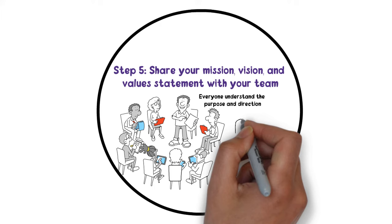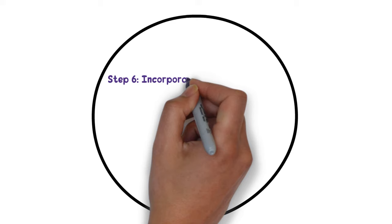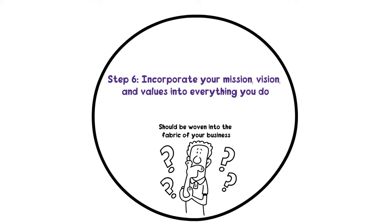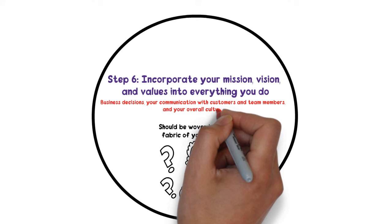Step 6: Incorporate your mission, vision, and values into everything you do. Your mission, vision, and values should be more than just words on a page — they should be woven into the fabric of your business. This means incorporating them into your business decisions, your communication with customers and team members, and your overall culture.